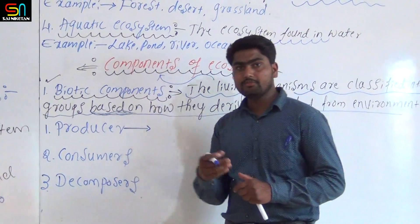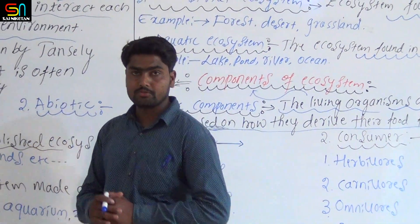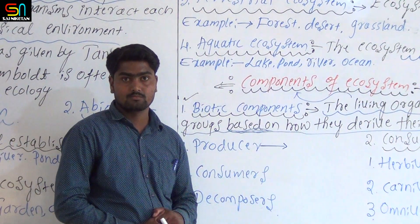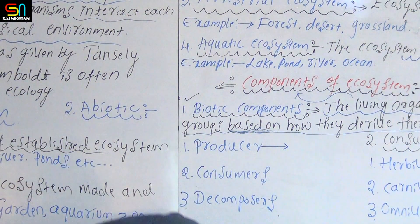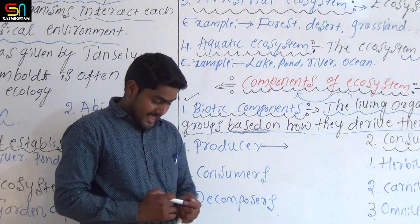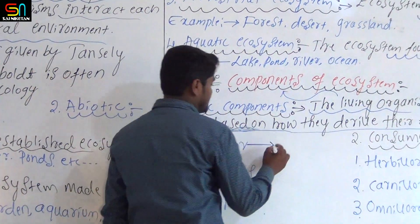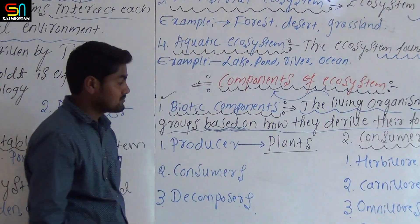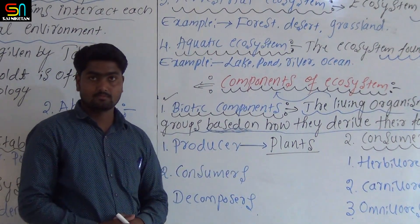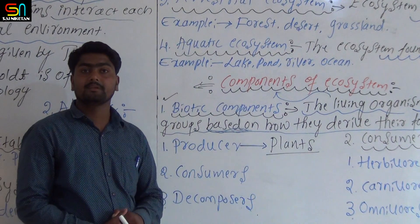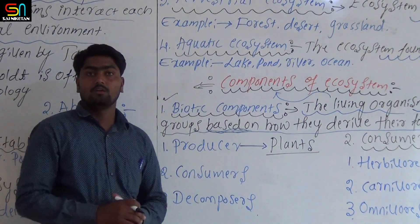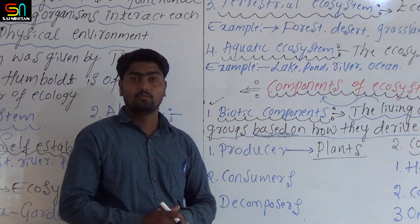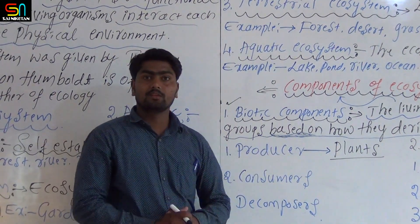Producers: those organisms which can prepare their own food. Example of producers are plants and blue-green algae. They can prepare their own food because of the presence of chloroplasts. These producers are also called autotrophs.